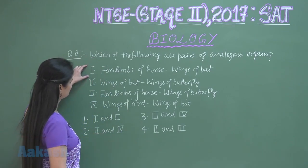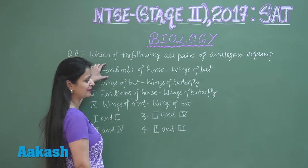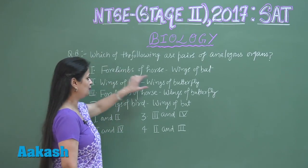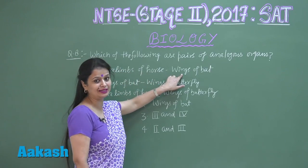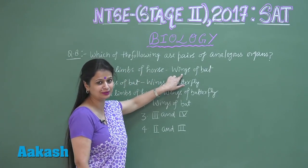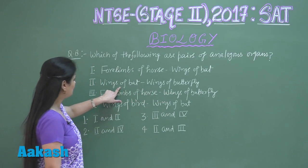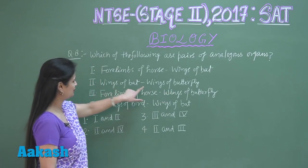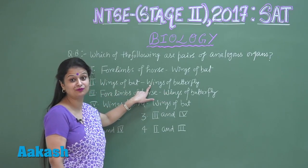The first option: four limbs of horse are for running, wings of bat are for flying — the function is different, so this option is not analogous. Wings of bat and wings of butterfly — they both are for flying, function is same, so this could be analogous.